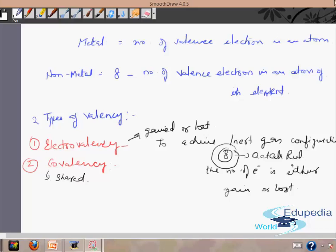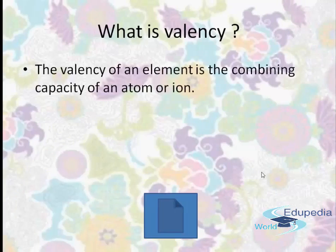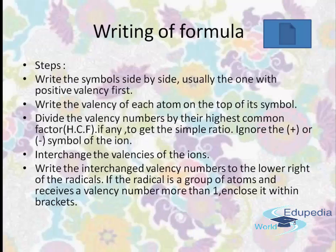Let's understand the definition. The valency of an element is the combining capacity of an atom or ion. We can also say that the valency of an element is either equal to the number of valence electrons in its atom, or equal to the number of electrons required to complete eight electrons in the valence shell. Now let's understand how to write the formula.